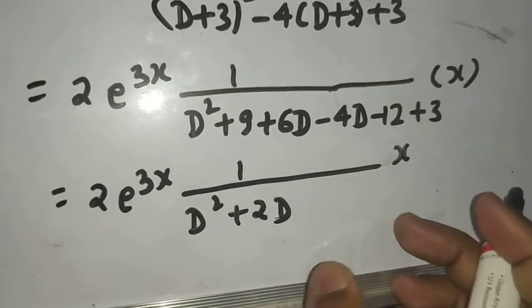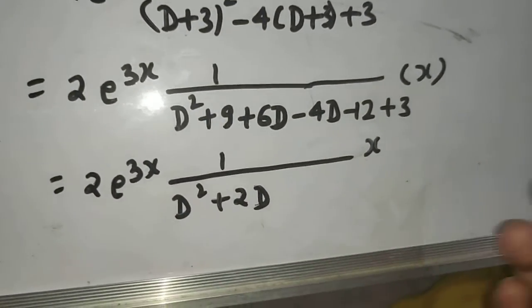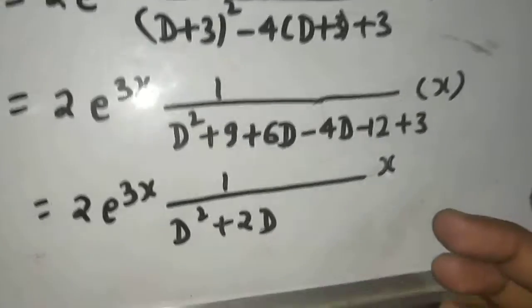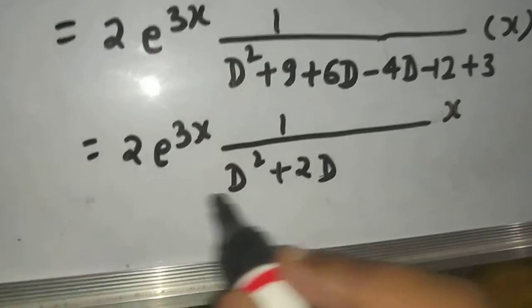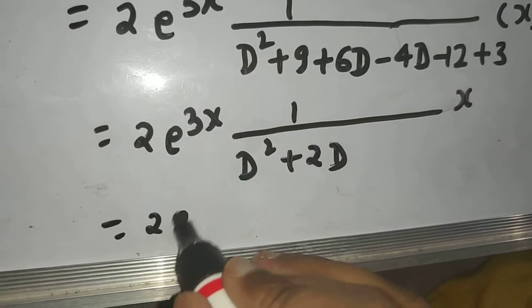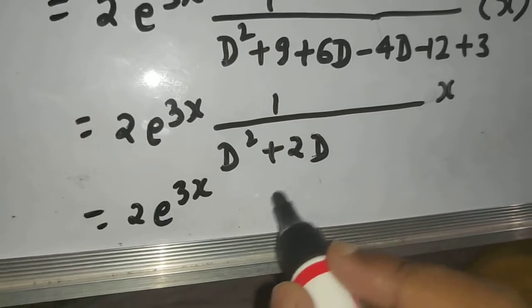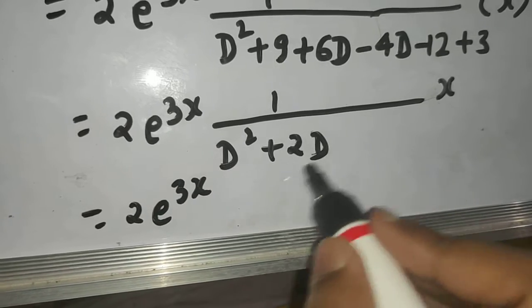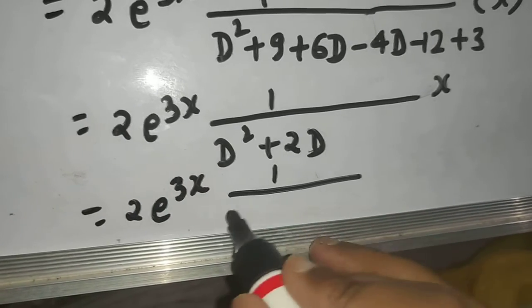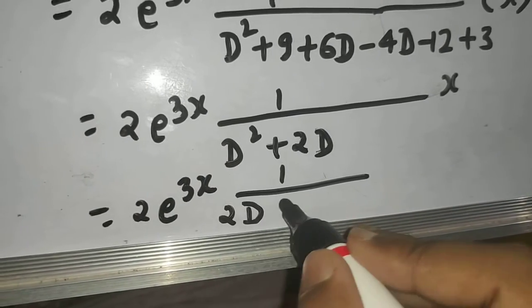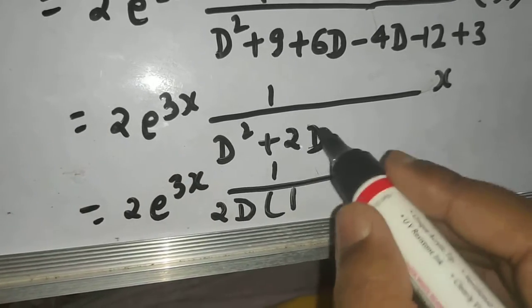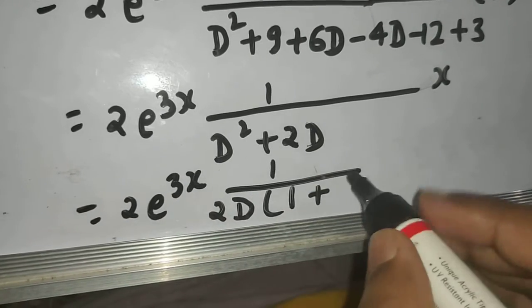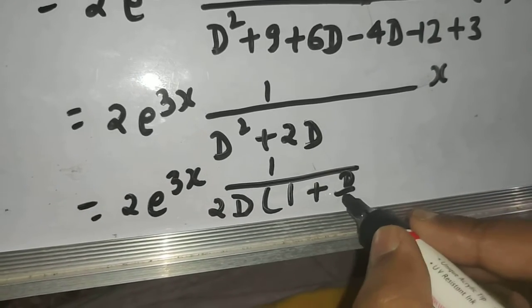Now what is the rule for x power n? You will again use the rule for x power n. What it says: take the lowest degree term out. So lowest degree term here is this term, so I will take that out common. So I will get 1 from this term and d square divided by 2d will be d by 2 simply, operating on x.